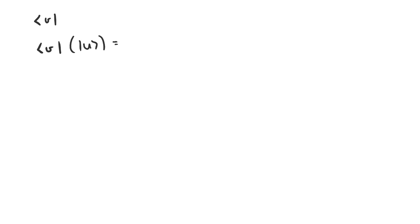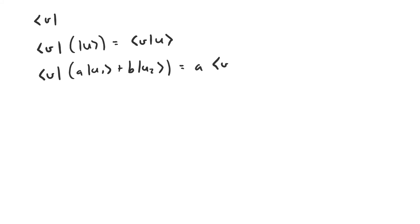The inner product allows us to define a new type of operator that acts on a vector to produce a scalar. It's usually denoted like this. This is a rather intuitive notation because when this operator acts on a vector it produces the inner product of those two vectors, which is a number. So when this operator acts on a general linear combination of two vectors, it's the same thing as if it just acted on each vector individually, because the inner product is linear in the first argument.